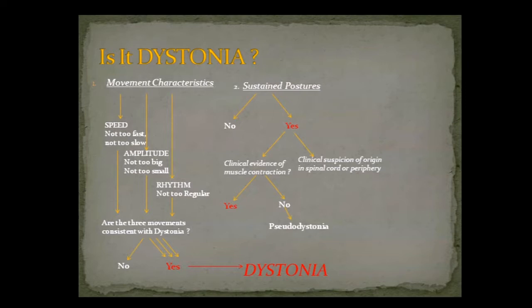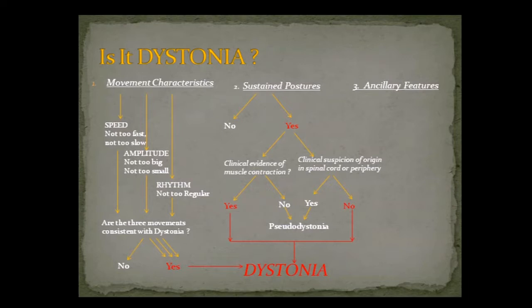In sustained posture, is there a clinical suspicion of origin in spinal cord or periphery — some injury or trauma? If yes, then you want to think of pseudodystonia. But if you don't think there is any evidence of spinal cord involvement or peripheral origin, then you want to think back to dystonia again.